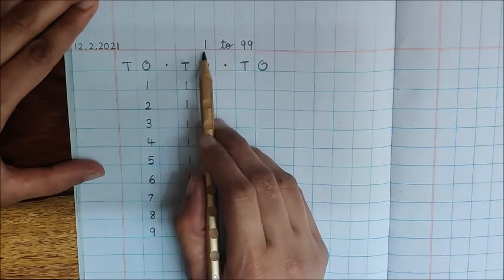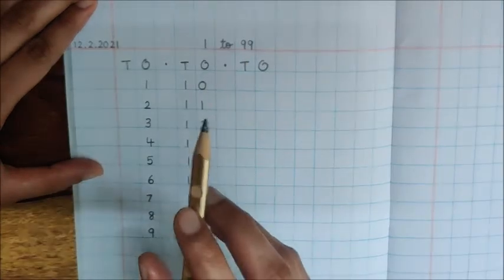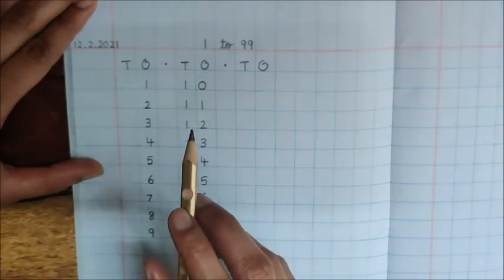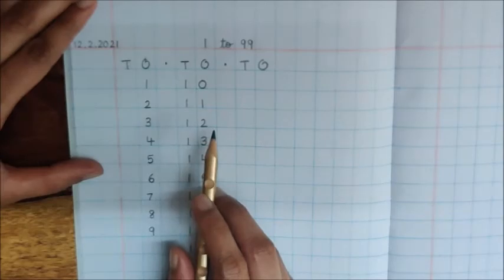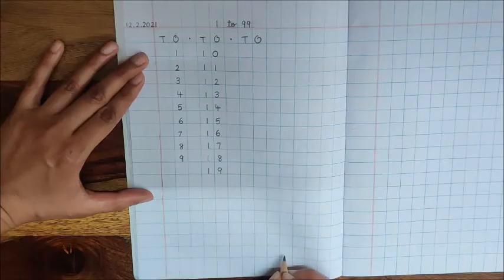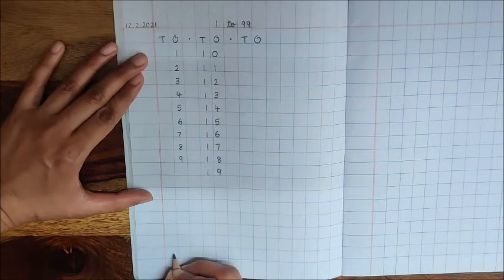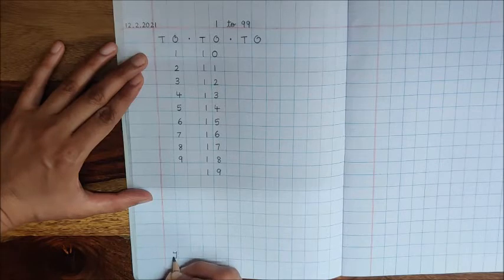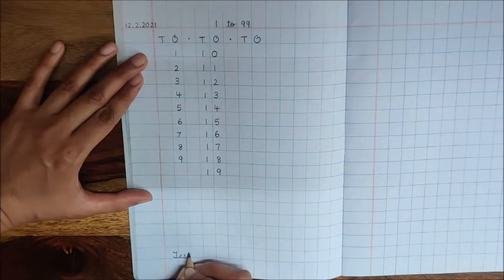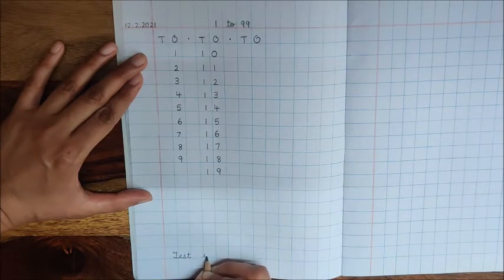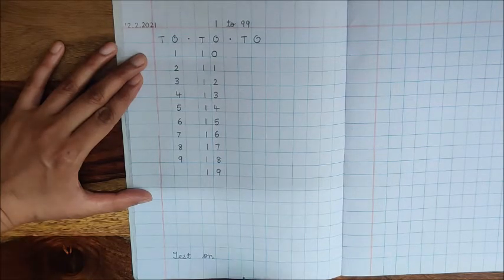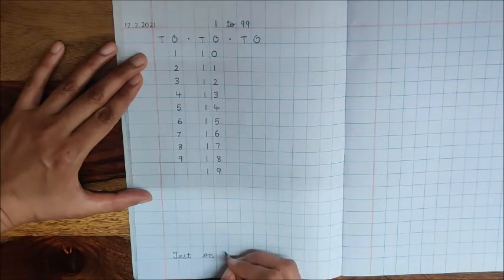You have to practice writing numbers 1 to 99 for your test on February 17. Now go to the last line and write a message: Test on February 17.